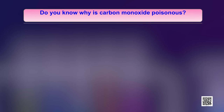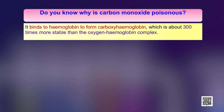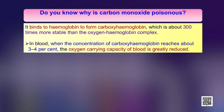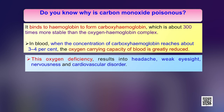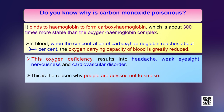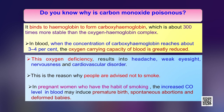Carbon monoxide is poisonous because it binds to hemoglobin to form carboxyhemoglobin, which is about 300 times more stable than the oxygen-hemoglobin complex. In blood, when the concentration of carboxyhemoglobin reaches about 3 to 4 percent, the oxygen-carrying capacity of the blood is greatly reduced. The oxygen deficiency results in headache, weak eyesight, nervousness and cardiovascular disorder — that is the reason why people are advised not to smoke. In pregnant women who smoke, the increased CO level in the blood may cause premature birth, spontaneous abortions and deformed babies.